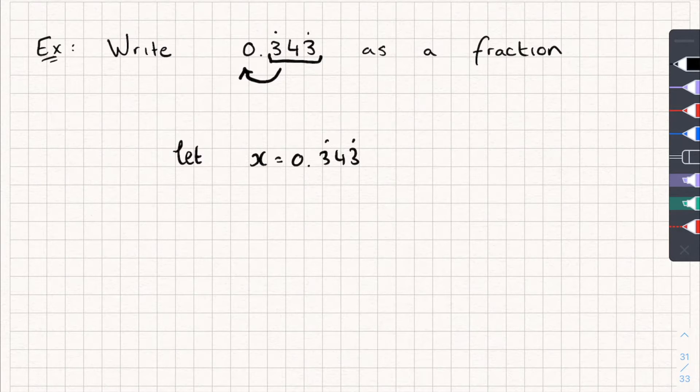And then I'm going to say, well, how could I move those three digits to the other side? Well, I could multiply them by 1000. So 1000x is going to be equal to 343.343 recurring.